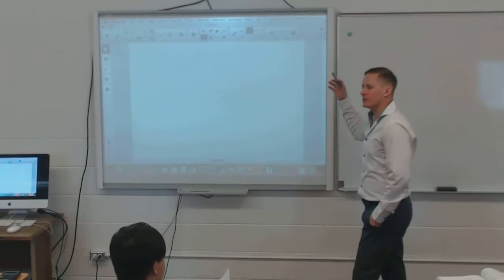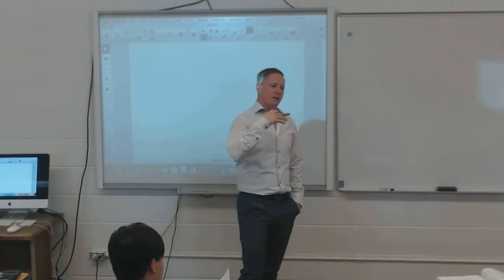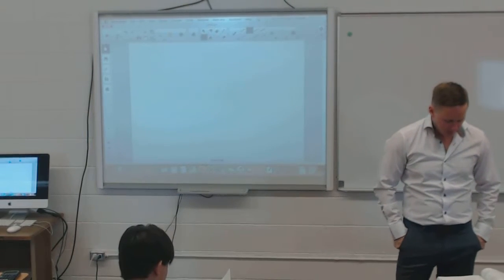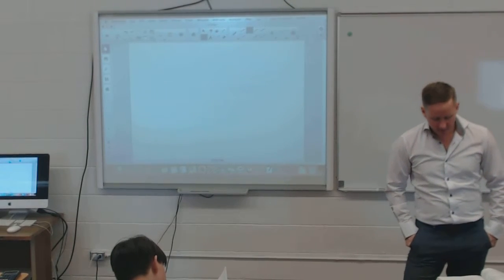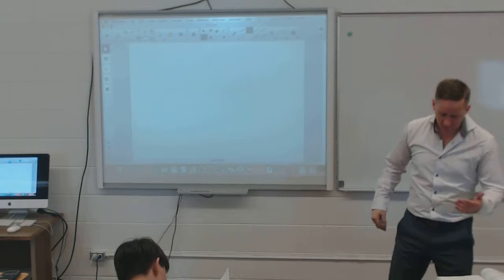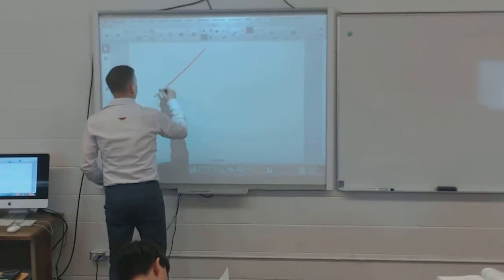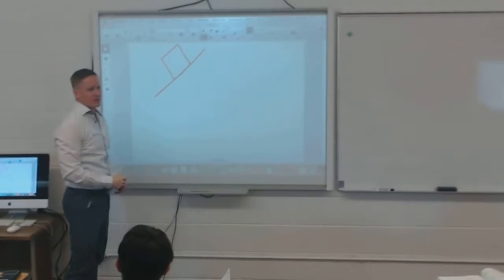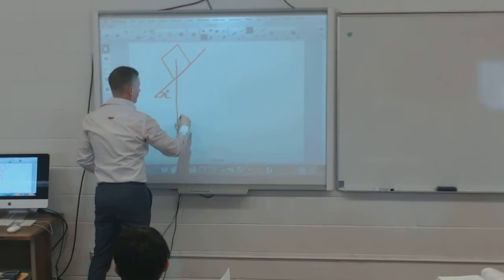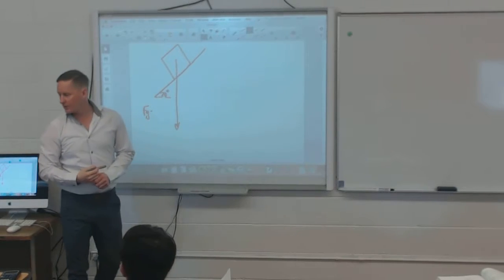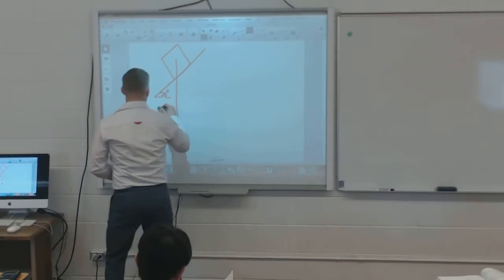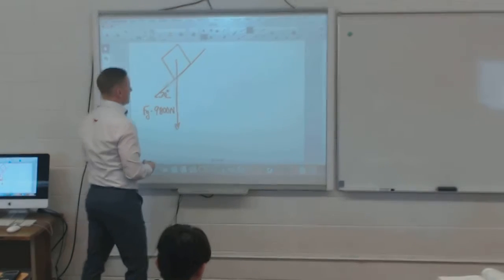We've already done the question where a box slides down a ramp, so we're using another force to keep it from sliding up the ramp. Let's draw our picture. The first force we always draw is the force of gravity. My incline is 20 degrees, and the force of gravity works straight down: 1,000 × 9.8 = 9,800 newtons.